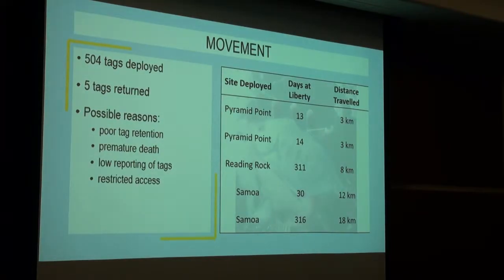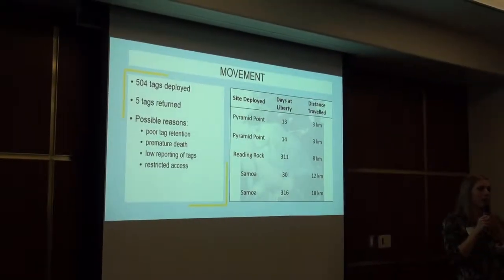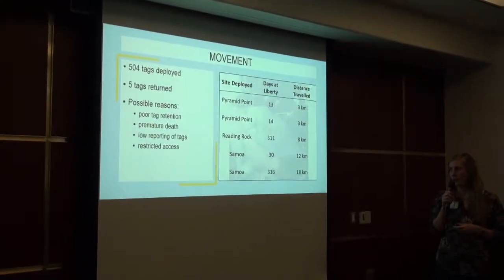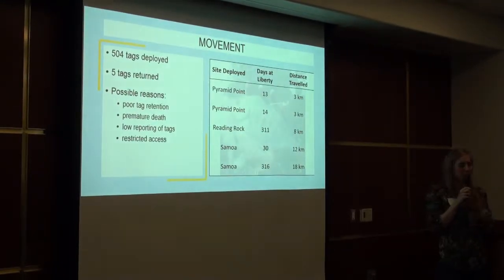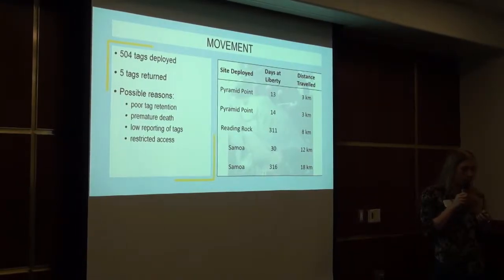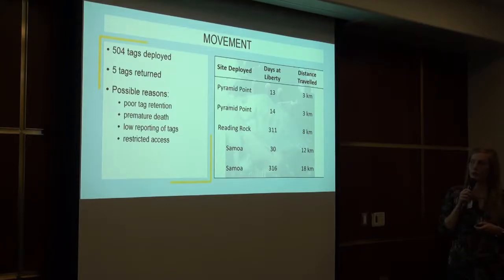There are several possible reasons for such low tag returns. First, poor tag retention — the tag may have fallen off after release. Second, the tags may have caused premature death through injury during insertion, or the visible yellow tag could attract predators. Third, there may have been low reporting — anglers may not have noticed the tag or chose not to report it. Fourth, restricted access to remote North Coast beaches may have prevented recapture. A study in Southern Oregon using the same tags on red-tailed surf perch found that poor tag retention and premature death were not factors, so we believe those were not reasons for our low returns either.